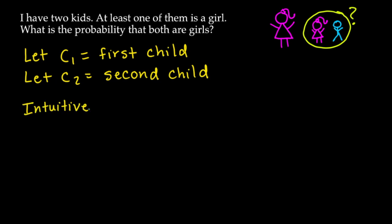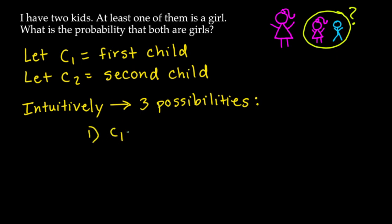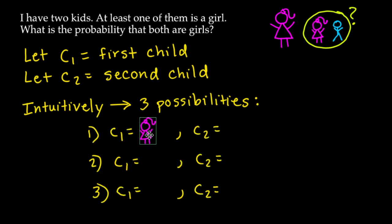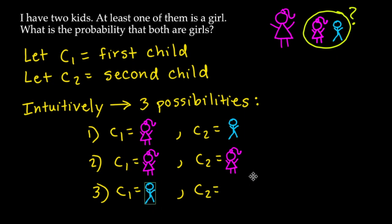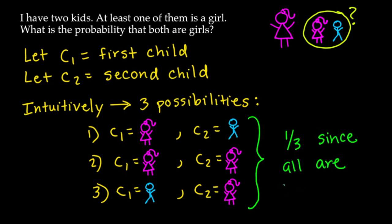Intuitively, there are now three possibilities. Case one: child one is a girl and child two is a boy. Case two: child one is a girl and child two is also a girl. Case three: child one is a boy and child two is a girl. These are the original four cases minus the case where both children are boys. Since all three cases are equally likely, the probability that both are girls — case two — is one-third, which is pretty surprising.